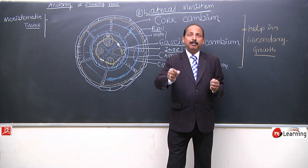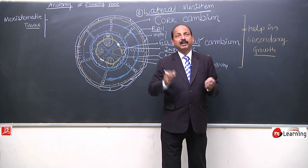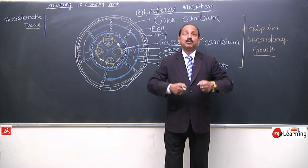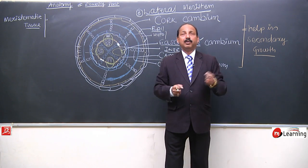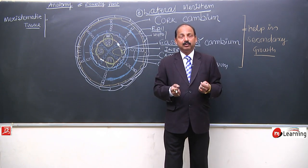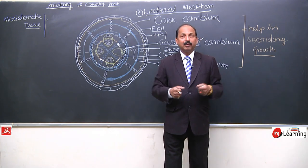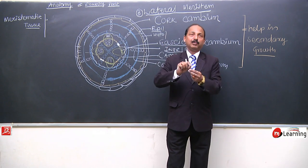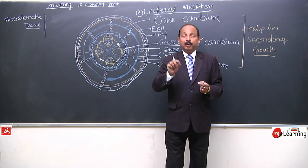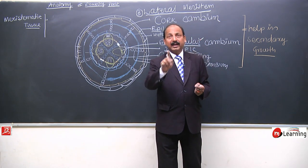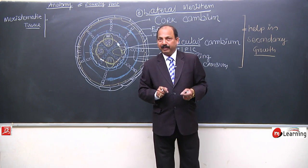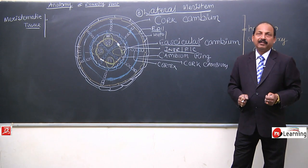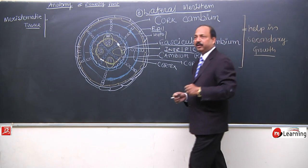Think of it this way: as long as you are growing tall, that growth of your body is called primary growth. And from the day you start getting fatter — that is secondary growth. So length increase is primary growth, and diameter increase is secondary growth. Secondary growth involves lateral meristem, which is lateral in position.